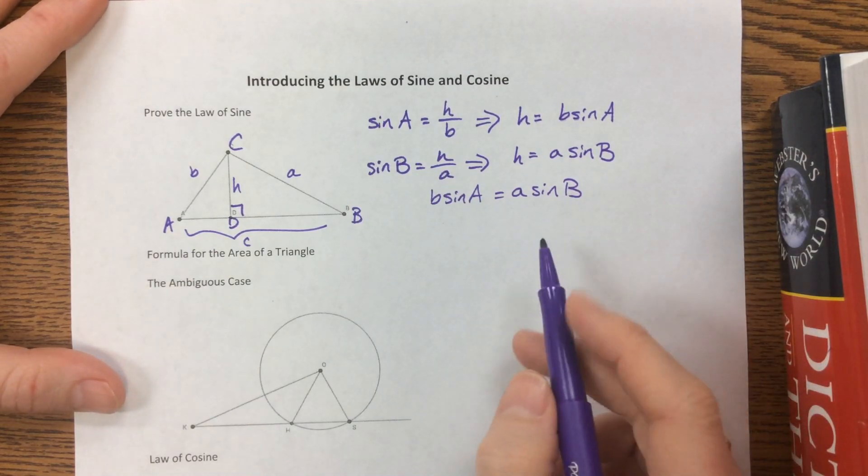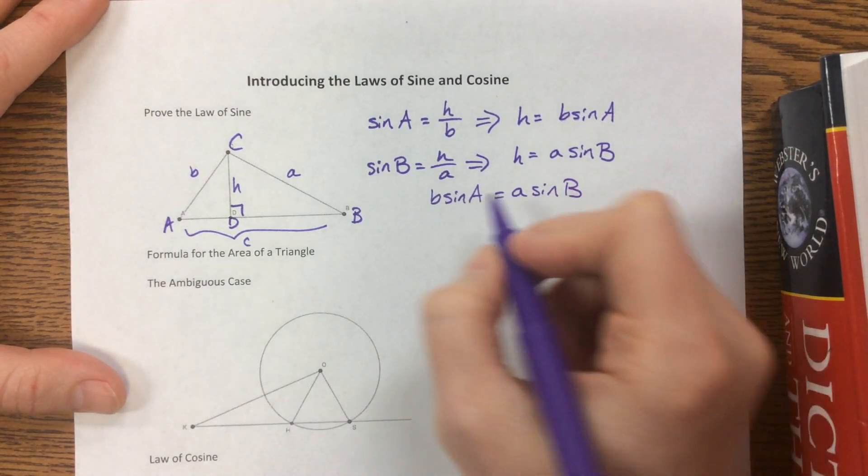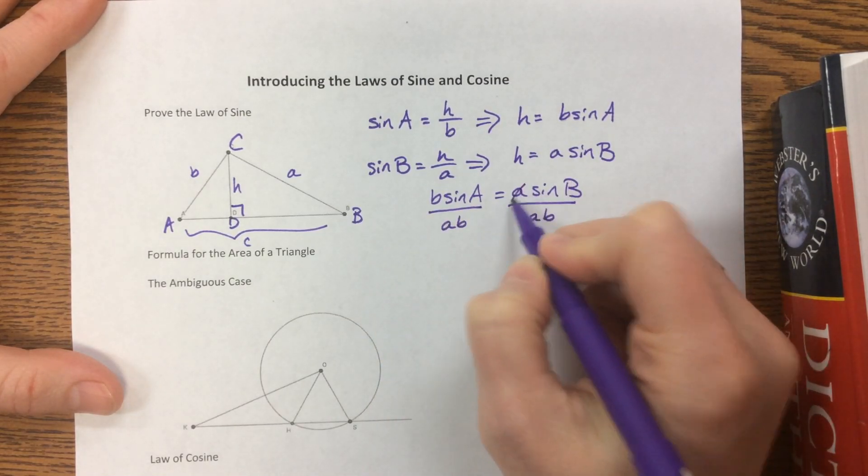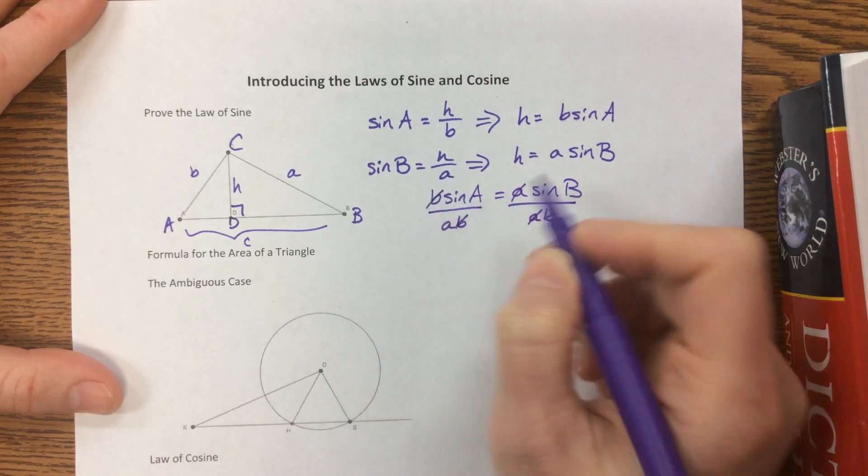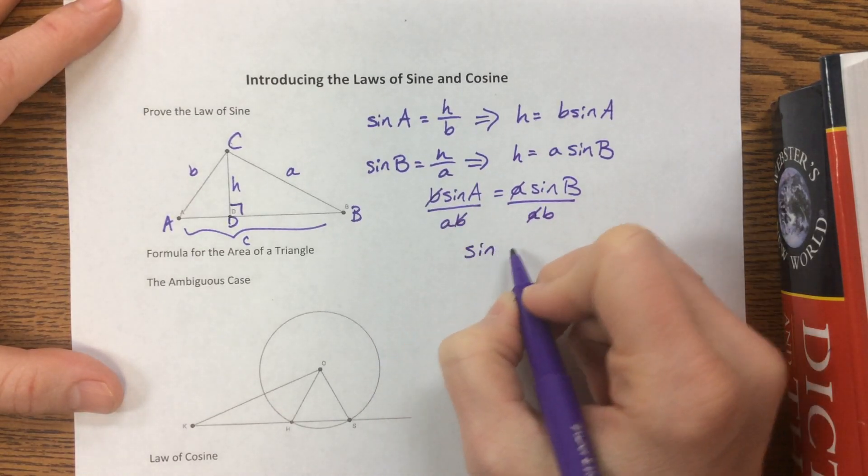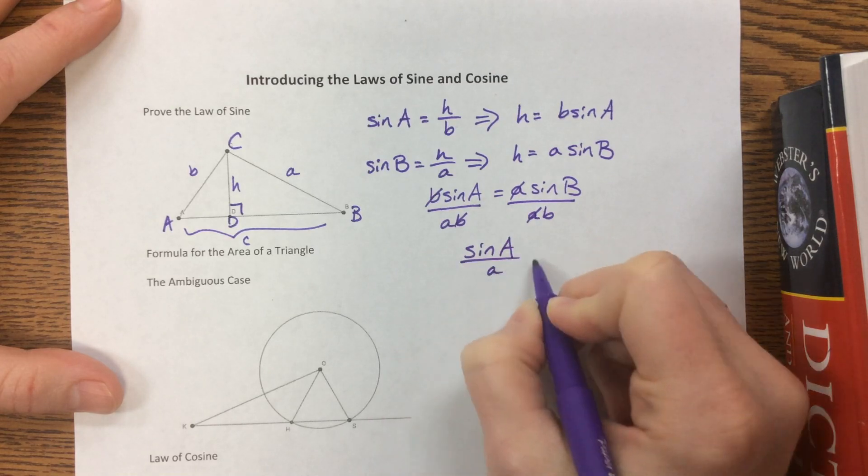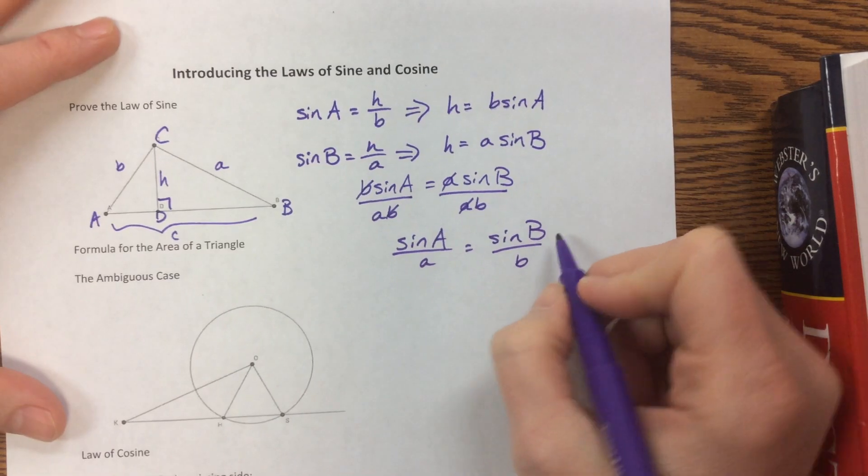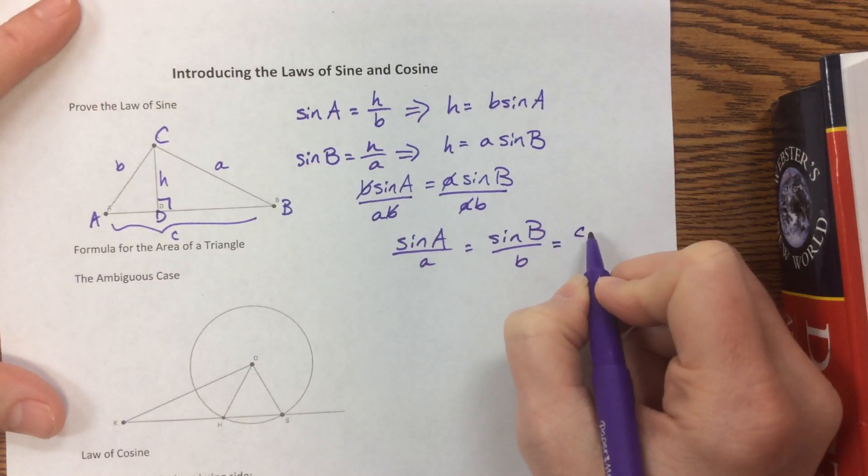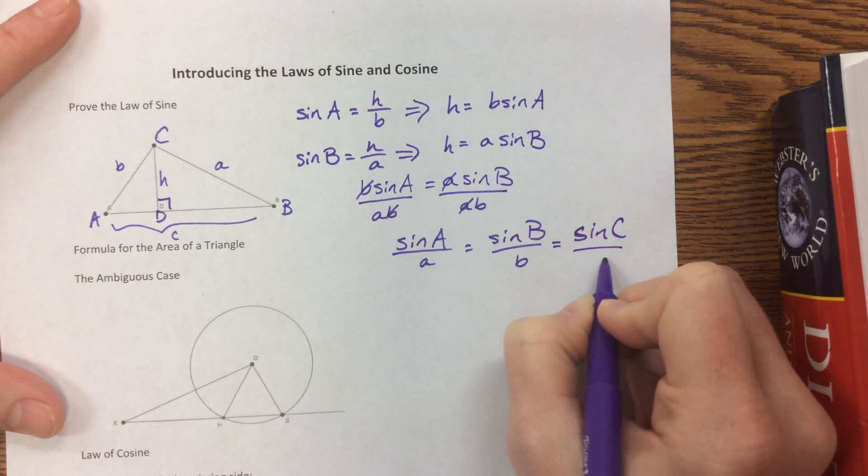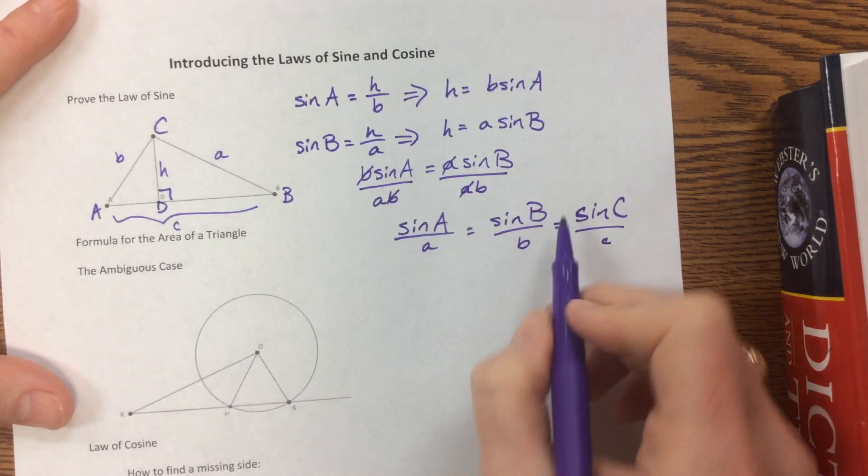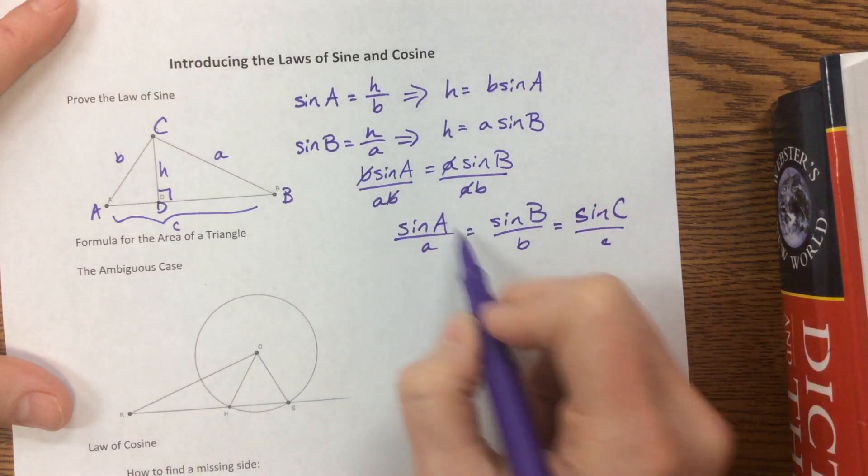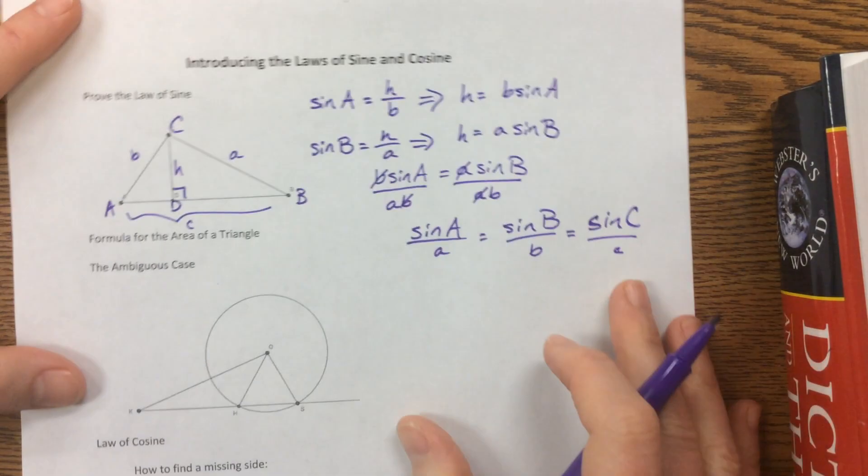And the way that we typically see the law of sine, the way that I like to write it, is I'll come through here and divide both of these by little a, little b. So notice my a's cancel here, my b's cancel here. The way that I write the law of sine is that sine of A over A equals sine of B over B. You can extend this out, it would also be sine of C over little c. So you can pick any two of these ratios. I could use C and A together if I wanted, or whatever the situation called for.